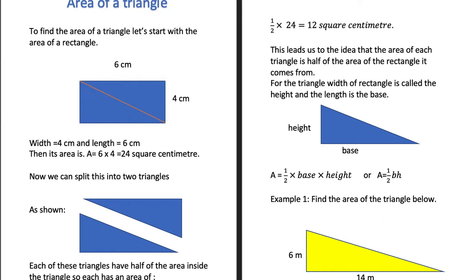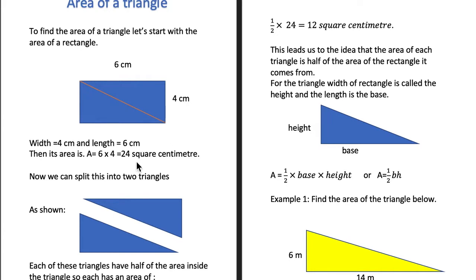To find the area of a triangle, let's start with the area of a rectangle. Here we have this rectangle which has a width of 4 centimeters and a length of 6 centimeters. We already know that to find the area of a rectangle you just times width by the length. So 6 times 4 gives us 24 square centimeters.